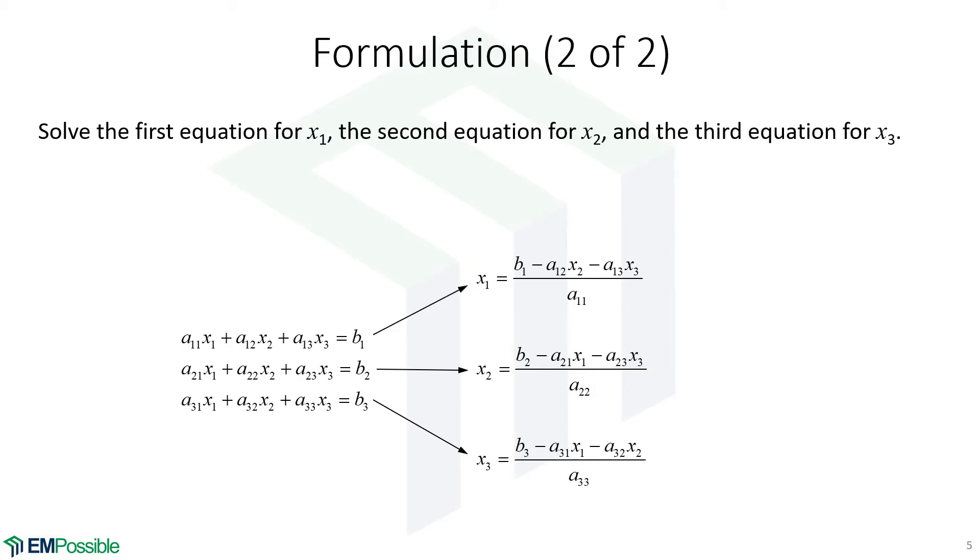Now, from there, what we're going to do is go each row at a time, solve the first row for x1, solve the second row for x2, and solve the third row for x3. And that's where we end up. So we have these three equations solved for x1, x2, and x3. And it turns out these are going to be the equations that we iterate to improve our guess at x1, x2, x3, every iteration.